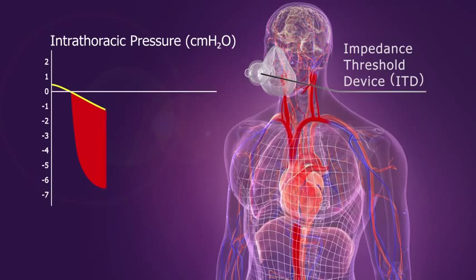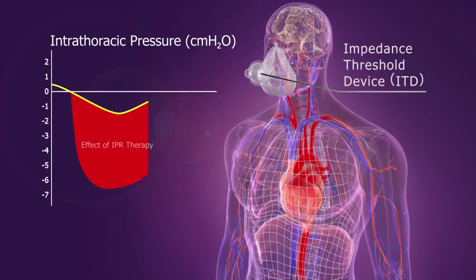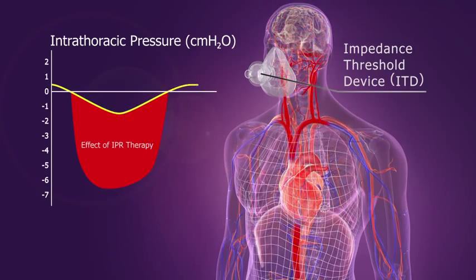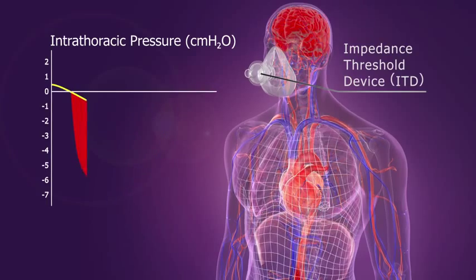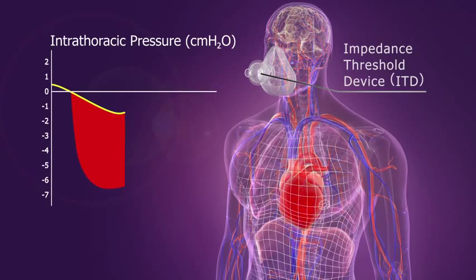This enhanced vacuum pulls more blood back to the chest and heart, enhancing preload and cardiac output. It also lowers ICP, making it easier to circulate blood to the brain.